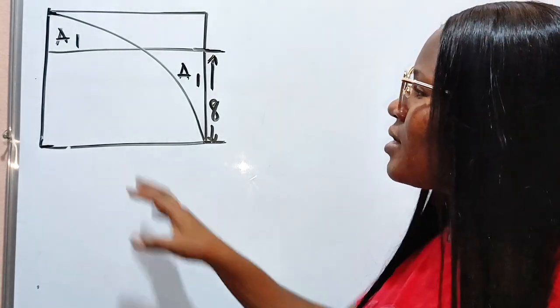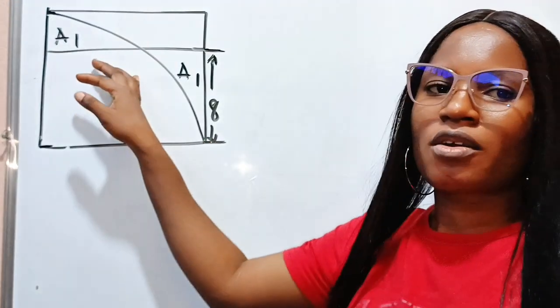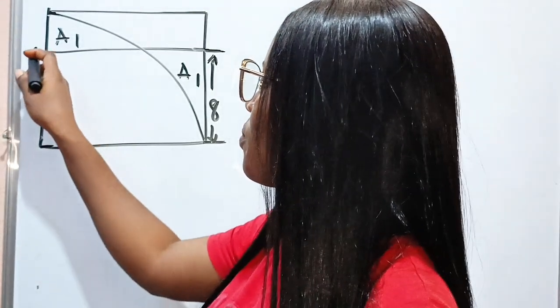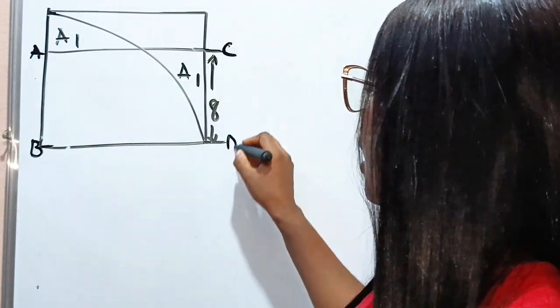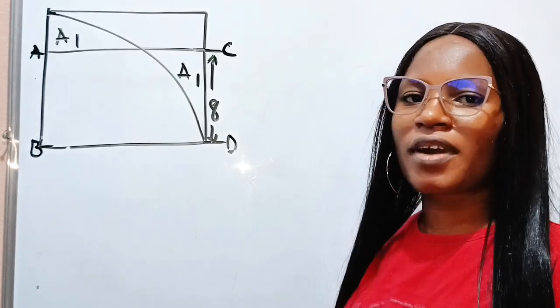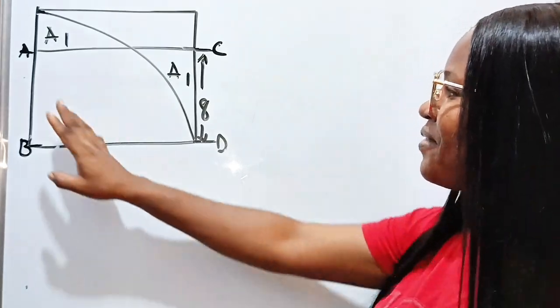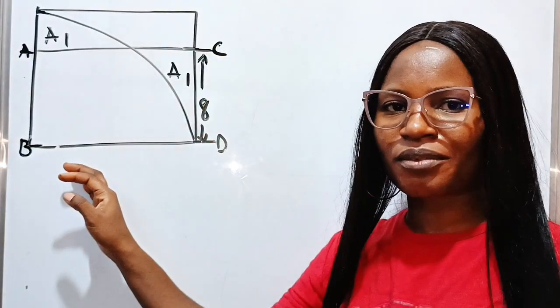Now, the question says we should find the area of this particular rectangle. That is rectangle A, B, C, and D. We are asked to find the area. So we are asked to find the area of this particular rectangle.